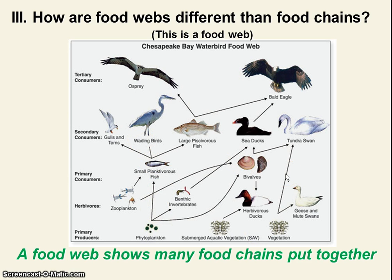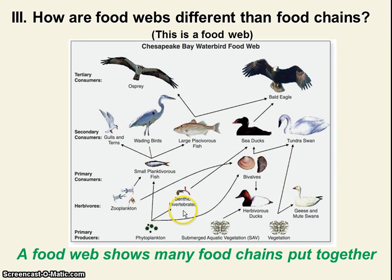In class we will practice looking at these, and we will practice using the vocabulary words from the previous part — producer, consumer, autotroph, heterotroph — to label these organisms. See you guys later. Great job.